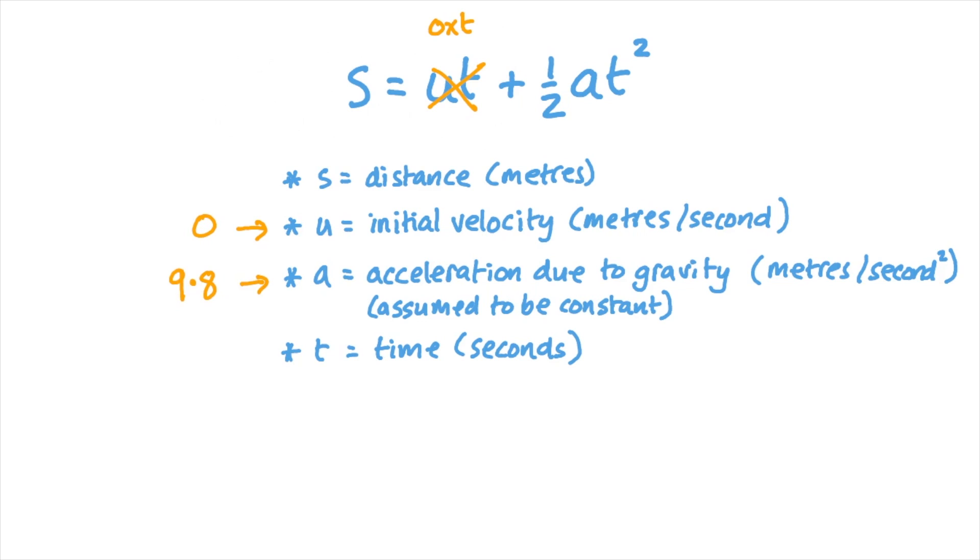I remembered that the acceleration due to gravity was about 9.8 meters per second per second, and we would ignore air resistance, which we thought would be fairly negligible for a small penny under these conditions at the sort of height we were. And that would give us the constant acceleration we needed to work with this formula.